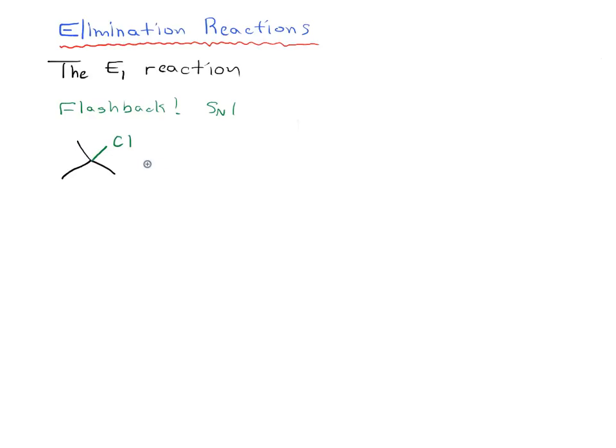If you think back to what happens in the SN1 reaction, remember that we usually have a tertiary alkyl halide of some sort, and the slow step or first step in the SN1 reaction is that the leaving group leaves. We're usually doing our SN1 reaction in the presence of solvents such as water, and usually it's a weak base, weak nucleophile.